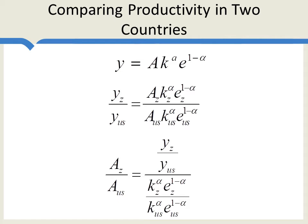In other words, if output per worker was a half, but you had half the human capital and half the physical capital, then you can explain all of that difference without resorting to differences in productivity. On the other hand, suppose that Zambia had the same levels of human and physical capital as the United States, so that this number was one, but they still had half the output per worker. That means the productivity level in Zambia must be half that of the United States. So this is a simple way of dividing differences in output per worker into those explained by factors of production and any remaining difference due to productivity.